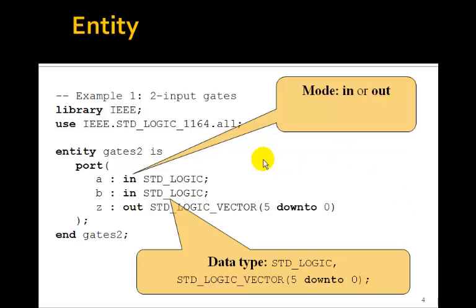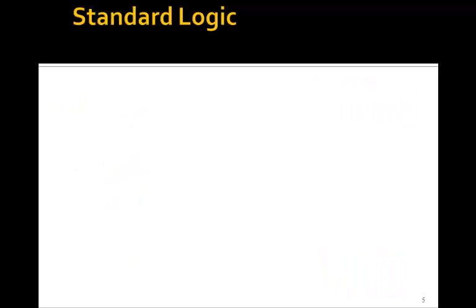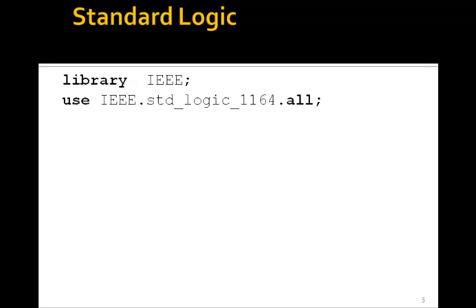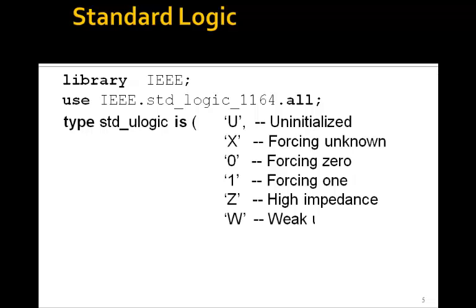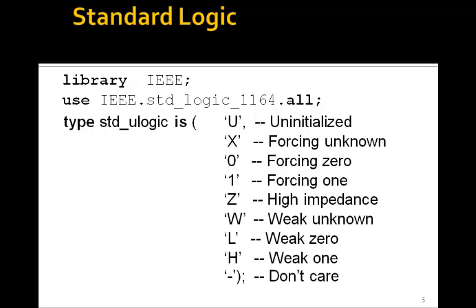The data type is of type standard logic or standard logic vector 5 down to 0. Standard logic is a type that's defined in this IEEE library. In that library, a type standard U logic is defined that has nine values: U means uninitialized, X means an unknown, 0 and 1 are the 0 and 1's you're used to, Z means high impedance, W is a weak unknown, L is a weak 0, H is a weak 1, and dash is a don't care.